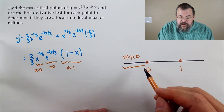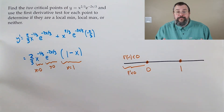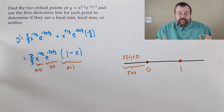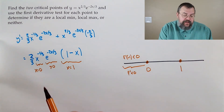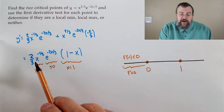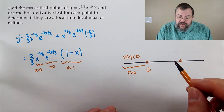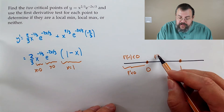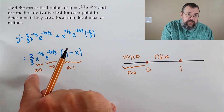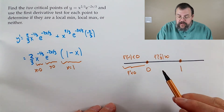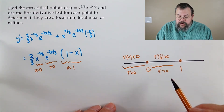So the derivative is negative for everywhere below 0. Between 0 and 1, pick x equals one half. One half to the negative 1/3 is positive; 1 minus one half is positive. So our derivative at one half is positive — meaning our function is going uphill from 0 to 1.